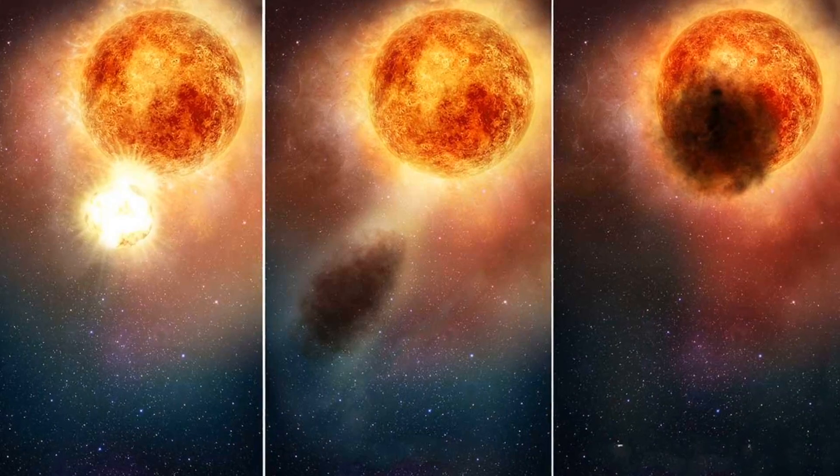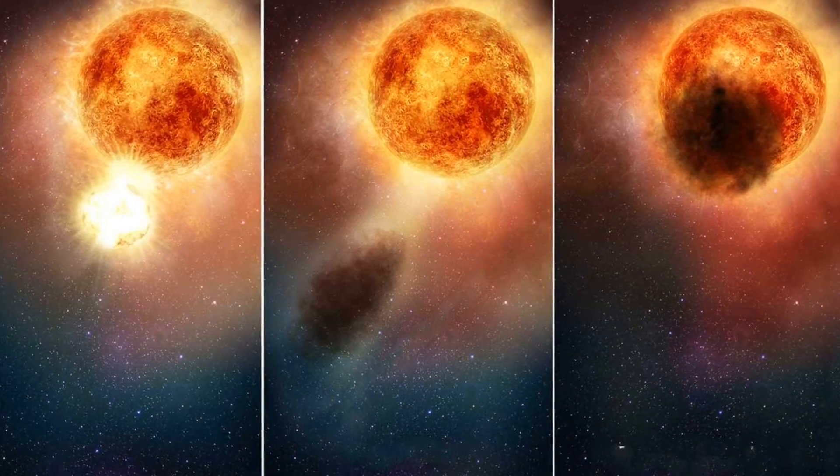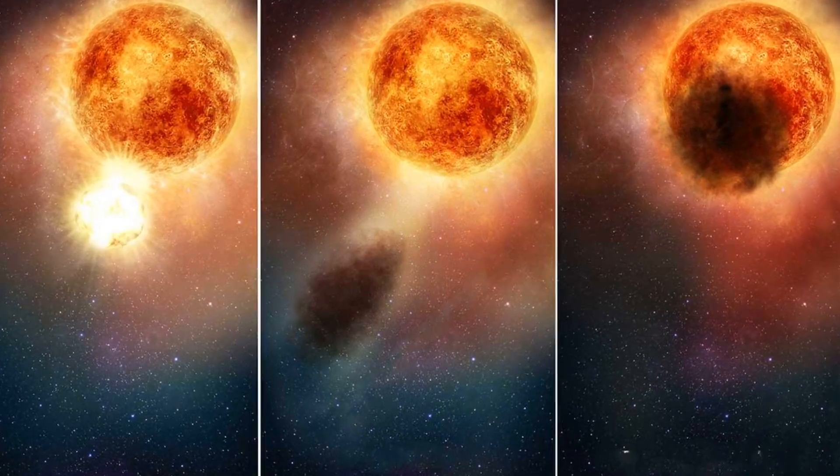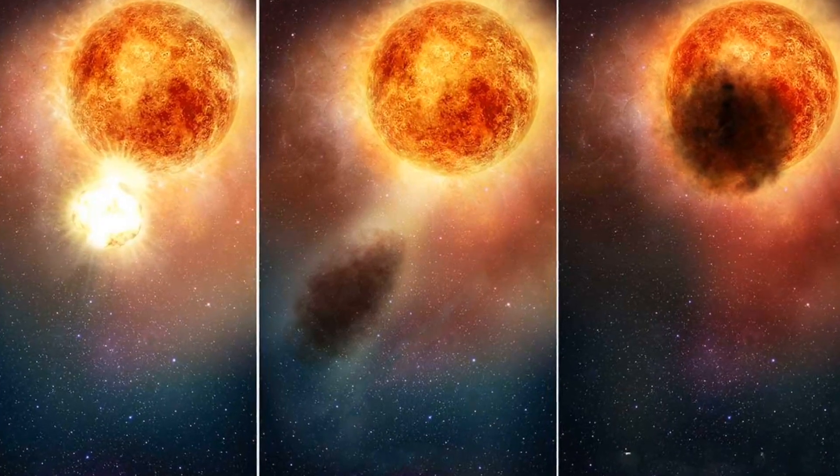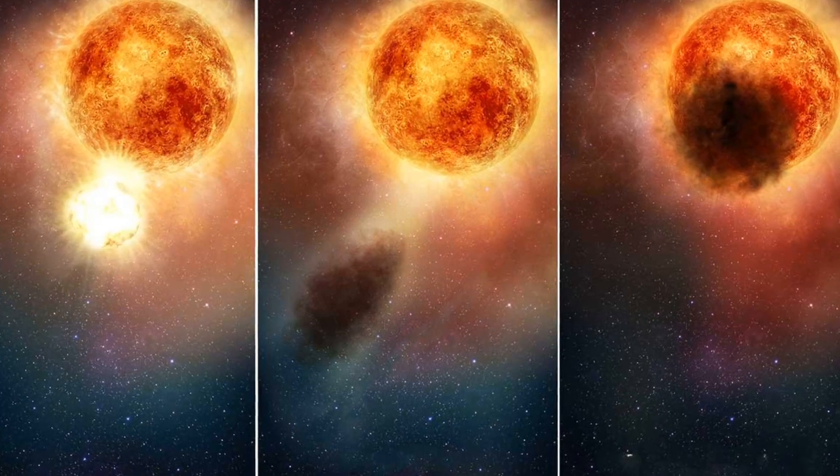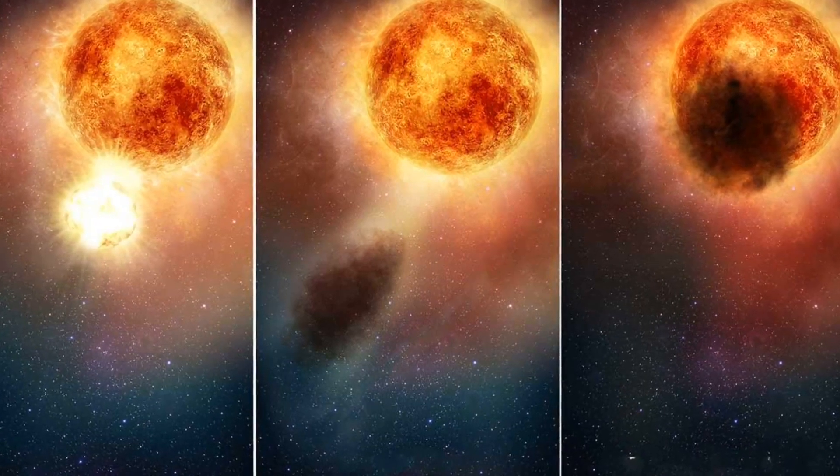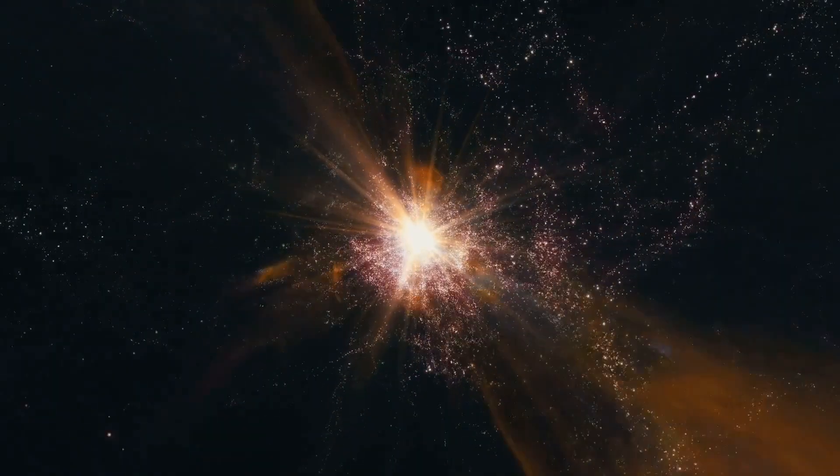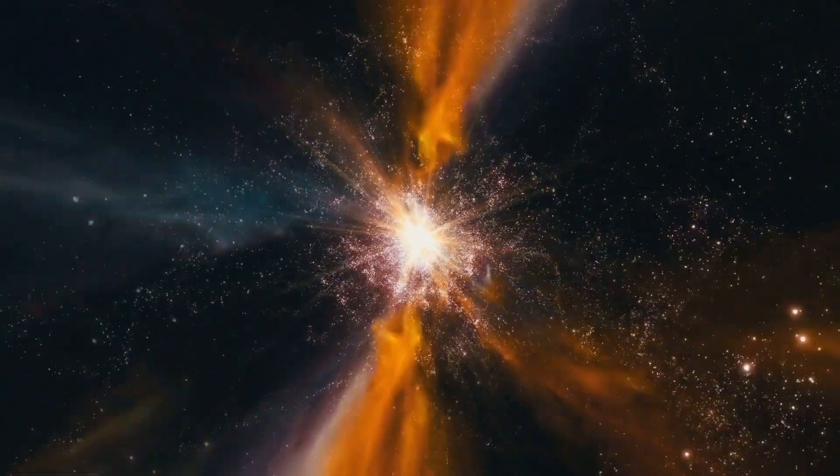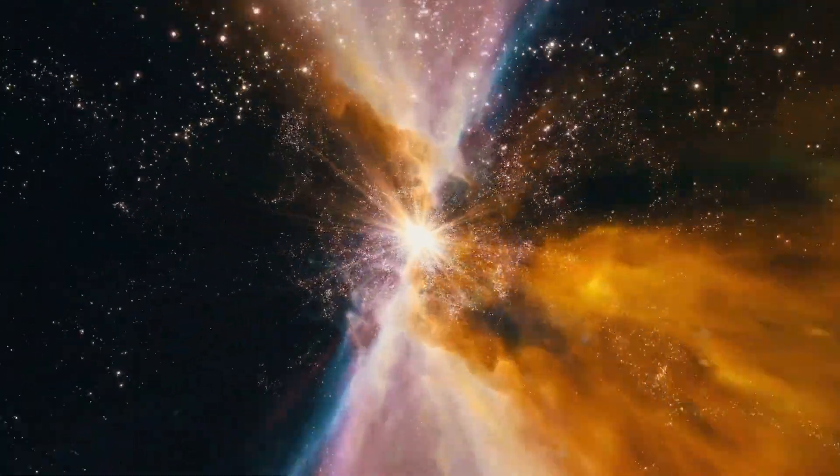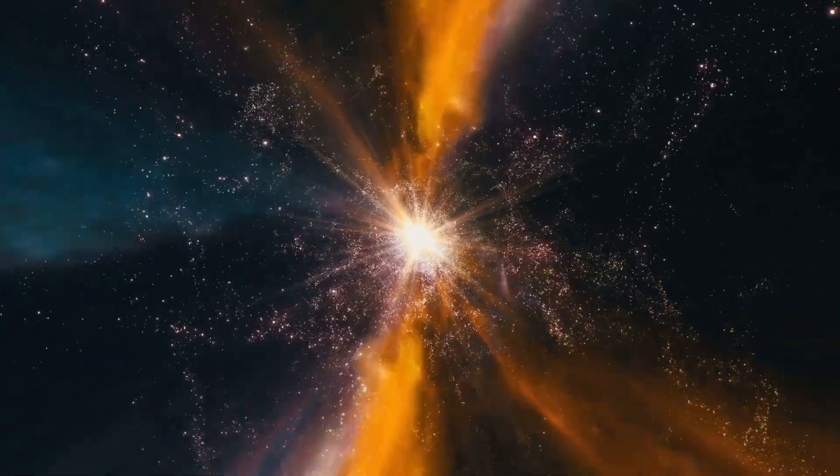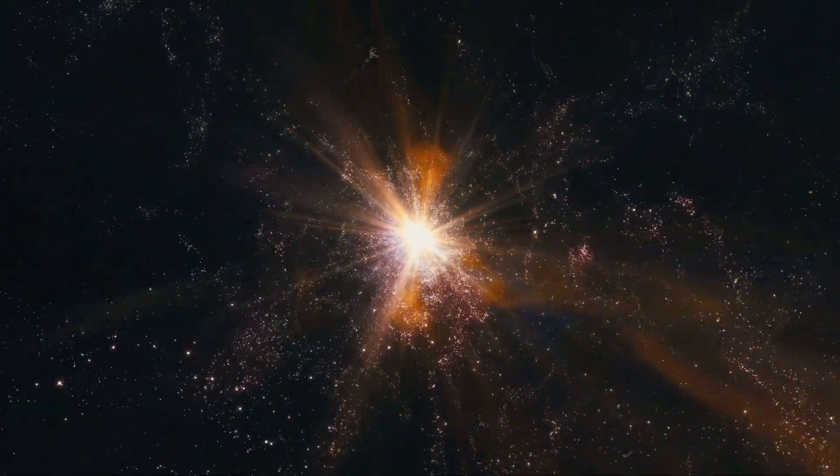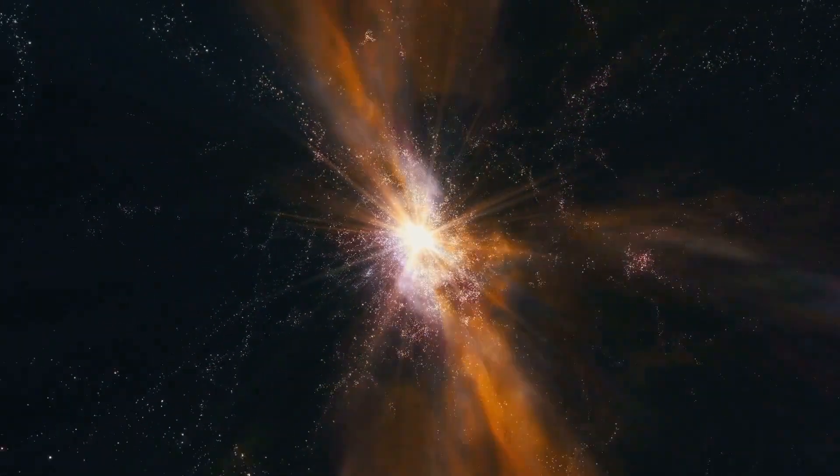But what would be the implications of a Betelgeuse supernova for Earth and our solar system? It is important to note that, despite Betelgeuse's relative proximity in cosmic terms, 650 light-years represent an astronomical distance. Such vast distances serve as natural barriers against the direct effects of a supernova. Our atmosphere, with its protective shield, would absorb most of the cosmic rays and radiation produced by the supernova, safeguarding life on Earth from direct harm.